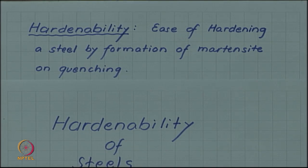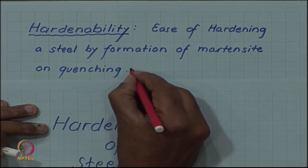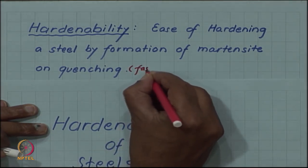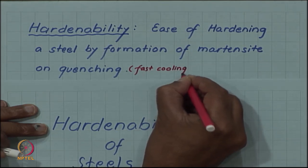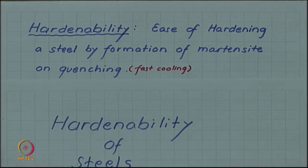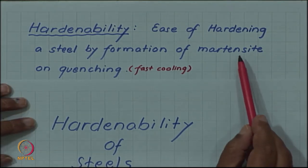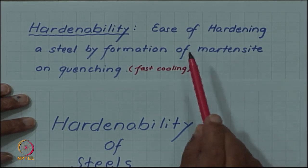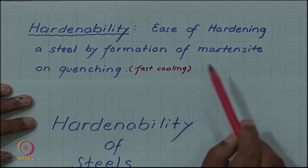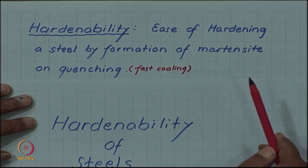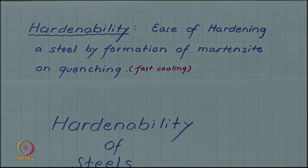Quenching is sufficiently fast cooling. If we cool fast enough such that we miss the nose of the C curve, then we can end up forming martensite. Martensite is very hard and brittle, so it gives hardness to the steel. The easier it is to have martensite by this quenching process, the higher is the hardenability.